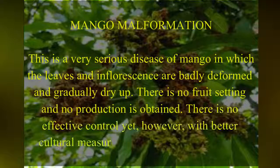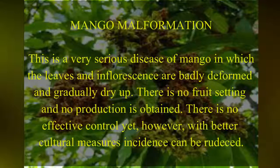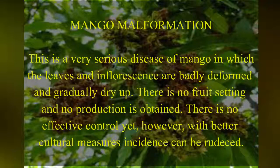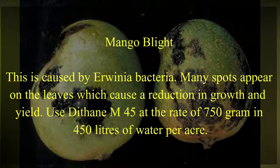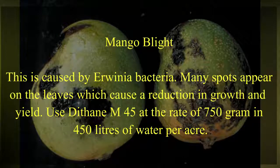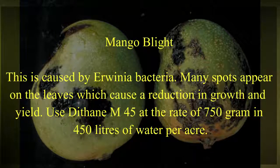Mango malformation: this is a very serious disease in which the leaves and inflorescence are badly deformed and gradually dry up. There is no fruit setting and no production is obtained. There is no effective control yet; however, with better cultural measures, incidence can be reduced. Mango blight: this is caused by Erwinia bacteria. Many spots appear on the leaves, causing a reduction in growth and yield. Use Dithane M-45 at the rate of 750 grams in 450 liters of water.